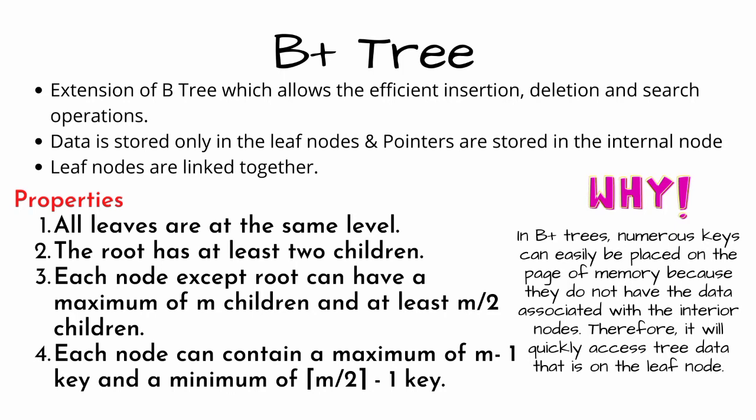All the leaves are at the same level and the second property, the root has at least two children. Third property, each node except the root node can have maximum of M children and at least M by two children. So M is the order of the tree.